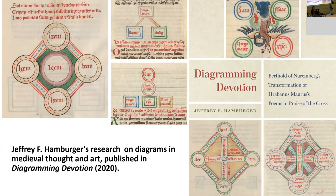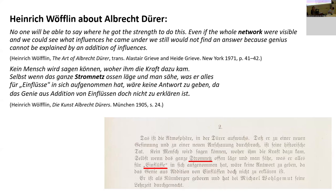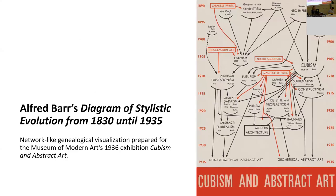The two concepts — networks and influence — differ in a number of important aspects and grow out of different perspectives, but their continuity and entanglement in art history is obvious. The mapping of influence from artist to artist, especially stylistic or formalist influence, may be one of the keys to the subsequent successful application of network concepts. As early as 1905, art historian Heinrich Wölflin linked the two concepts when he referred to networks of artistic influence in reference to Albrecht Dürer, albeit to argue that Dürer transcended such influences. Similarly, Alfred Barr's iconic diagram of stylistic evolution is nothing more than a simple visualization of a network of influences.